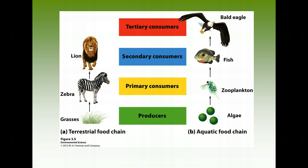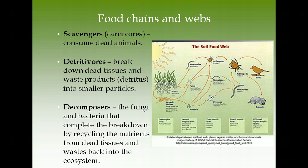A typical terrestrial food chain: grass (producer) → zebra (primary consumer) → lion (secondary consumer). A typical aquatic food chain: algae → zooplankton (primary consumer) → fish → eagle (tertiary consumer).